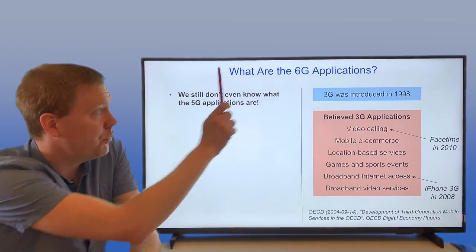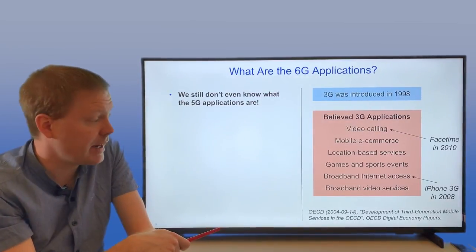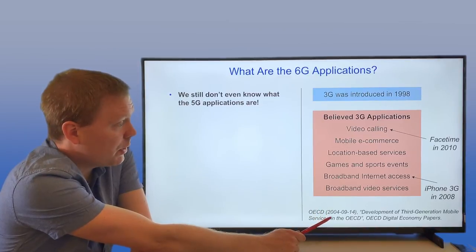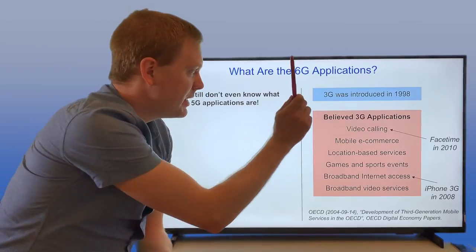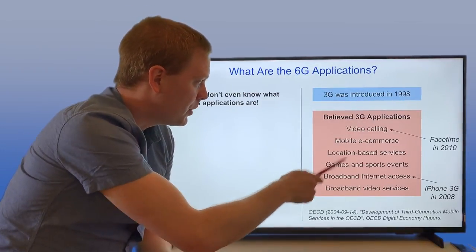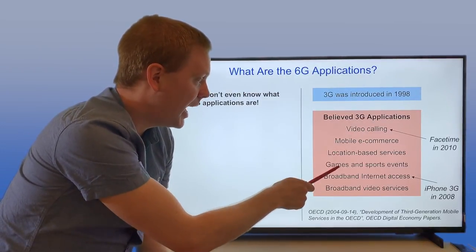Here's an example of that. 3G was introduced in 1998. Six years later, in 2004, OECD was writing the believed 3G applications. It contains video calling, mobile e-commerce, location-based services, games and sports events, broadband internet, broadband video services. This was in 2004.